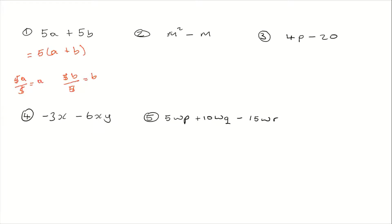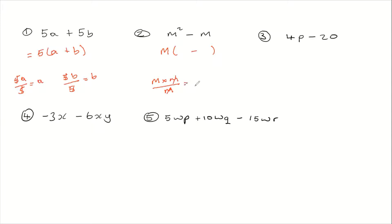Let's look at this one. We have m squared minus m. What is the common factor between these two terms? m would be the common factor. How do we get the term inside of the bracket? We're going to take m squared divided by the common factor m. Note that m squared means m times m. So m squared divided by m — m in the denominator will take out one m in the numerator. So the result that we have is just m. So here in the bracket, we're going to put m.